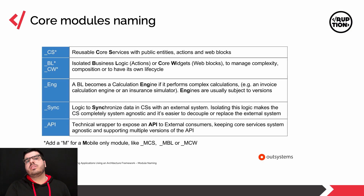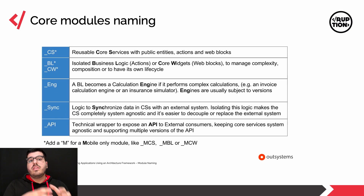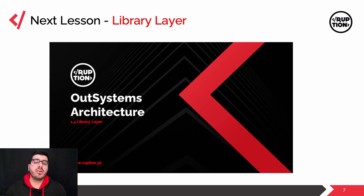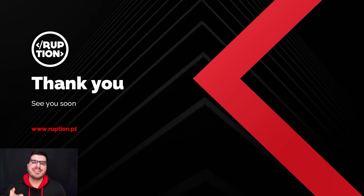Finally, we have the _API suffix, which is a technical wrapper to expose APIs to external consumers, keeping core services system agnostic and supporting multiple versions of the same API. Every single one of these naming conventions will add an M prefix for mobile. That's it for today's video. On the next one, we're going to take our last theoretical approach at the architecture series by looking into the library layer, and then we'll move on to more practical examples with the module refactoring video. Thank you all for watching, and see you soon!